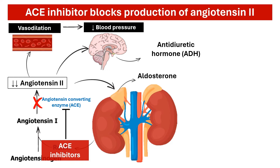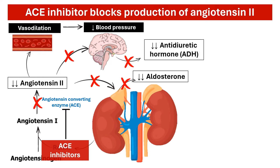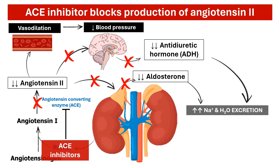Reduced angiotensin 2 also reduces production of aldosterone and ADH. By reducing aldosterone and ADH levels, ACE inhibitors help to eliminate excess fluid from the body, further contributing to blood pressure reduction.